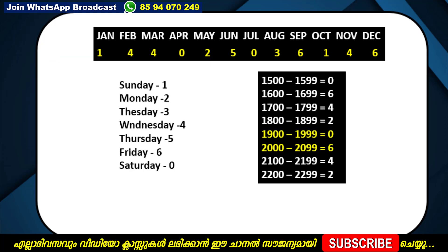We are here today. January, February, March, April, May, June, July, August, September, October, November, December. We are going to take a look at the code for each of the 12 months.